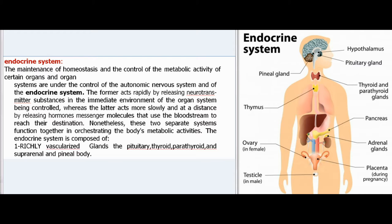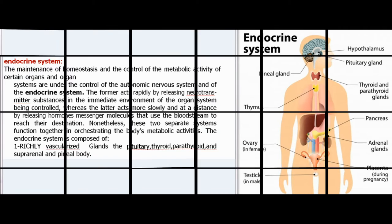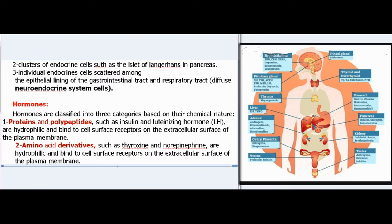Nonetheless, these two separate systems function together in orchestrating the body's metabolic activities. The endocrine system is composed of: (1) richly vascularized glands — the pituitary, thyroid, parathyroid, suprarenal, and pineal body; (2) clusters of endocrine cells such as the islets of Langerhans in the pancreas; (3) individual endocrine cells scattered among the epithelial lining of the gastrointestinal tract and respiratory tract — diffuse neuroendocrine system cells.